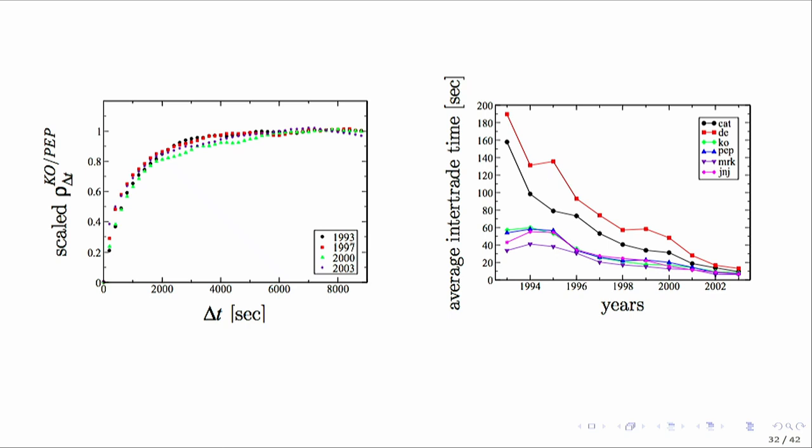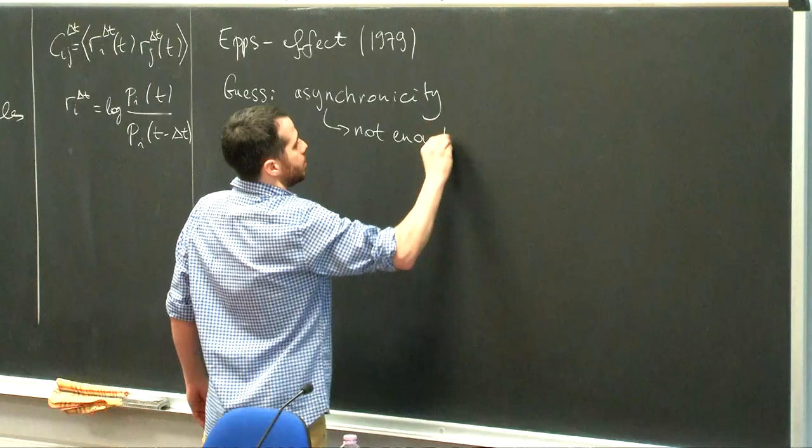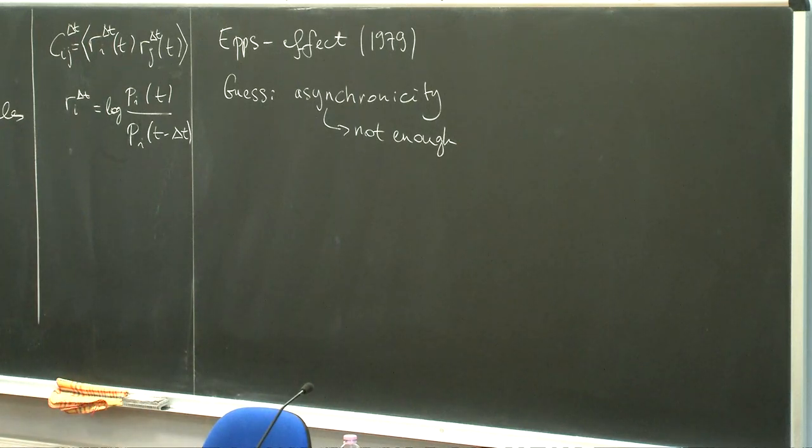Looking at the left side, you see the same Epps curves for different years - 1993, 1997, 2000, 2003 - scaled to one for simplicity because correlations can vary in time. What you see is actually a quite good collapse of the curves: the characteristic time of this effect didn't change, while there was a factor of ten change in synchronicity - the typical frequency of trades. So this alone is not a sufficient explanation.